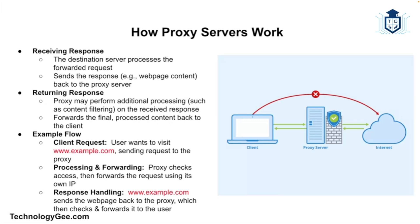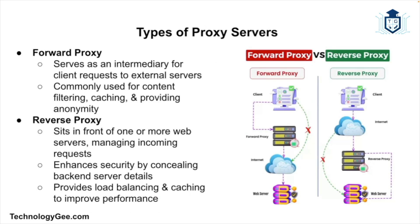The proxy server checks if access to that website is allowed, and if it's permitted, it forwards the request to the destination server using its own IP address. The destination server processes the request and sends the web page content back to the proxy server. Finally, the proxy server receives the web page content, checks it for any restricted content, and then forwards it to the user.